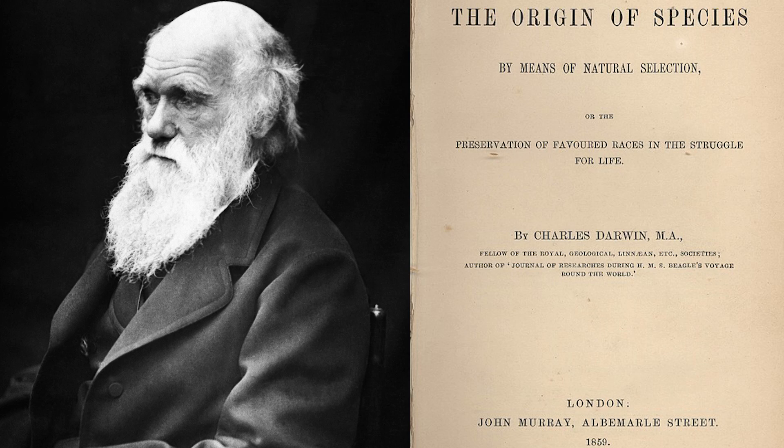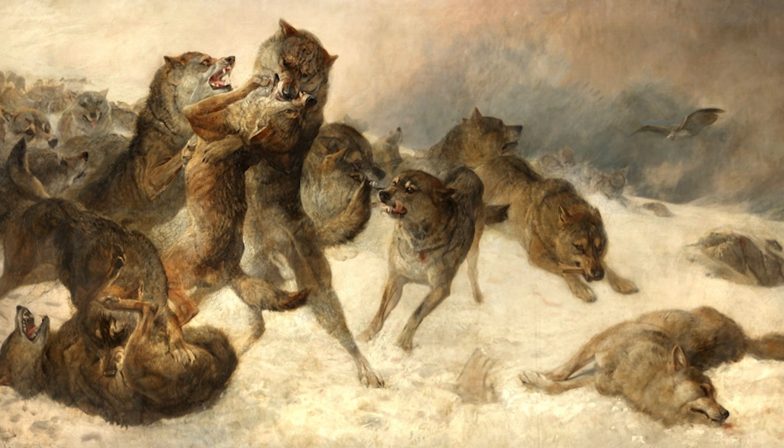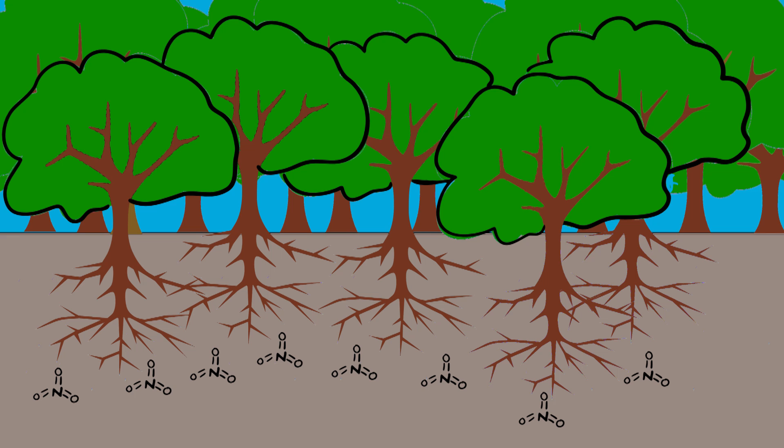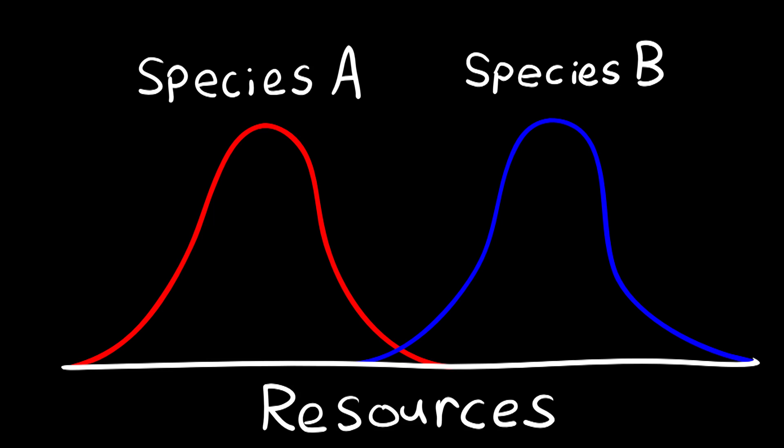Charles Darwin's foundational work talks about how the struggle for existence is a driving force in life. A key struggle organisms face is competition from other species. Lions and hyenas overlap in prey items, causing conflict. Species of trees compete over space and resources in the soil, like nitrate. Microorganisms compete for a variety of tasty chemical compounds. In these examples, species compete because they have shared interests — they utilize overlapping resources.